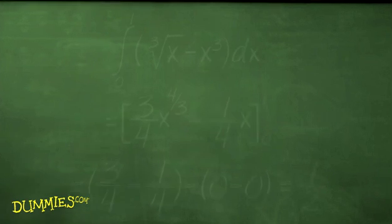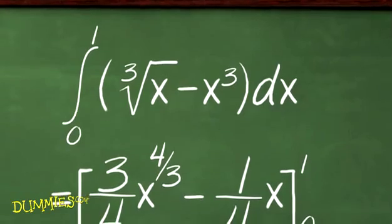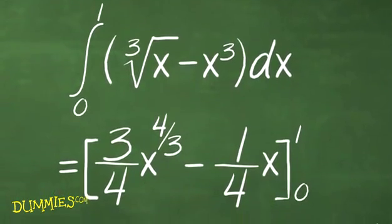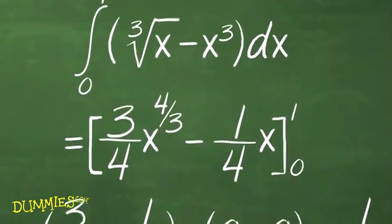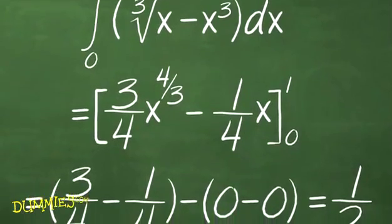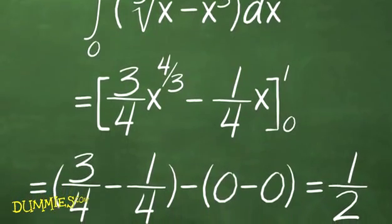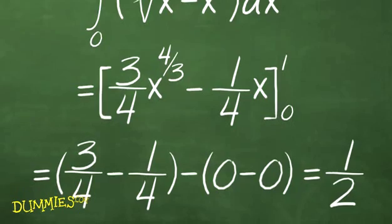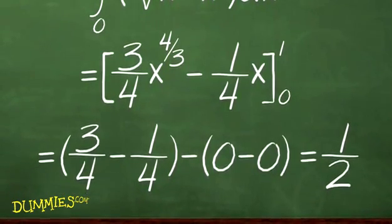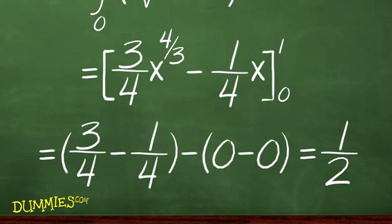Next, figure the area of the region on the left. For this region, y equals the 3rd root of x is above y equals x cubed. The height of a representative rectangle is the 3rd root of x minus x to the 3rd power. Its area is height times base, or the 3rd root of x minus x squared times dx, and the area of the region is one half.